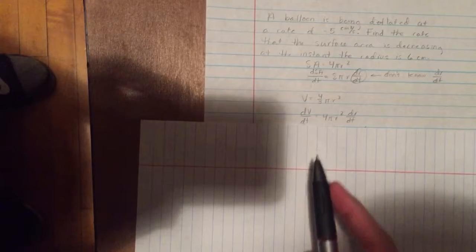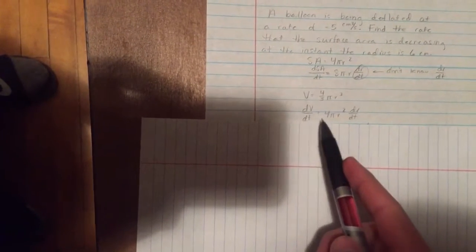Since we're given a volume value here, we can go ahead and find dr/dt. So we'll take the derivative of the formula for the volume of a sphere, and we get dV/dt is equal to 4πr² dr/dt. So we already know dV/dt and the radius, so go ahead and plug in our values.